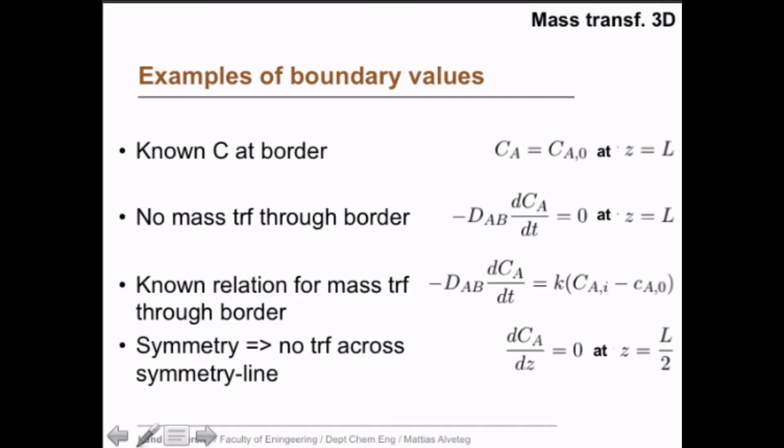Or you might know that you have for symmetry reasons have no transfer across the symmetry line. For example, if you stuff a pipe full with some goo and then put it in a river and let this goo diffuse out of the pipe, and if it's open in both ends, you might expect that you have no mass transfer across the midline of the tube because it's leaking out in both ends instead.